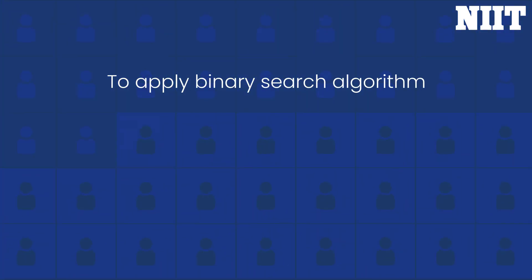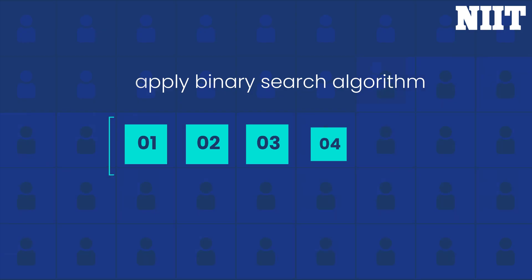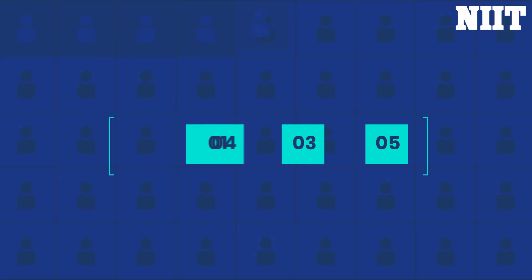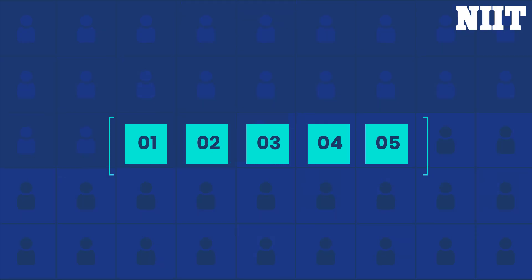To apply the binary search algorithm, you should ensure that the list to be searched is sorted. If the list is not sorted, it needs to be sorted before binary search can be applied to it.